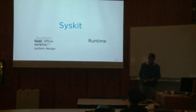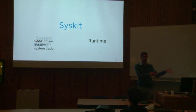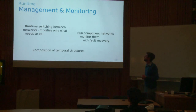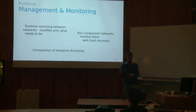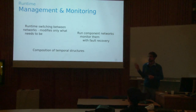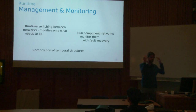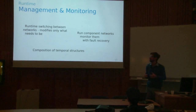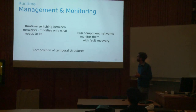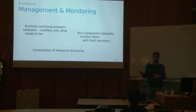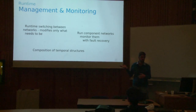The goal is having an offline iterative system design — and offline really means you don't even need a robot. Somebody else is fixing the vision, and you can still do your coordination model. On the runtime side, Syskit takes care of switching between the networks in a smart way — if you have subparts of your network that are identical between two behaviors, it won't touch them. It would be dumb to shut down everything and bring it all back up when only one component needs to change. It also does monitoring and fault recovery, and composition of temporal structure — multiple state machines in parallel.